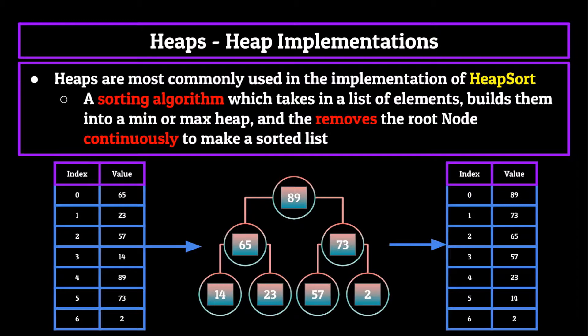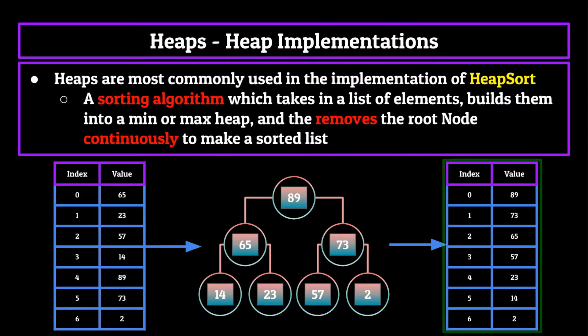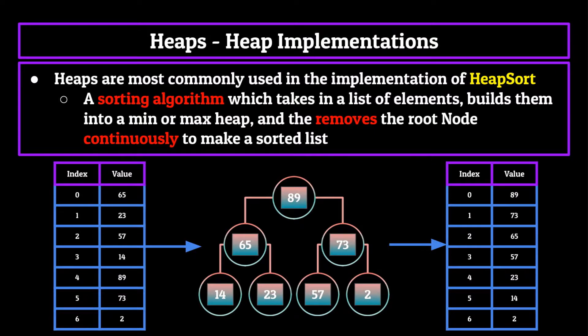On your screen, you'll see we have an unsorted list on the left. In the middle, we've created a max heap. And then we can keep removing elements until finally, we're left with a sorted list on the right. Heapsort is a really cool algorithm, and will be part of our upcoming series on sorting algorithms, which is kicking off very soon. So if you're interested in that, make sure you subscribe so you don't miss it.